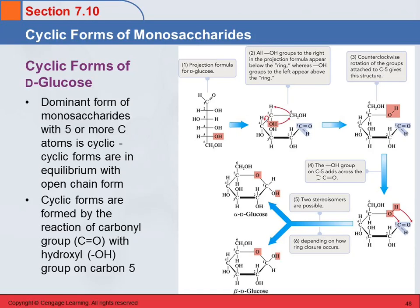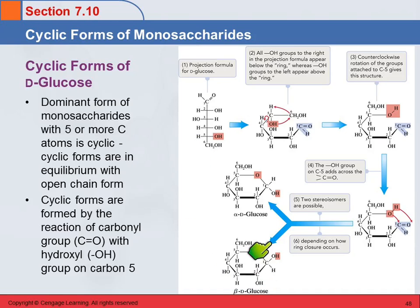It turns out that the dominant form of most monosaccharides is actually cyclic — they make a ring with themselves. Here's an illustration of how it does that. Carbon 1 is here, and down on carbon 5, this hydroxyl group is going to be involved in making the ring. What we're going to end up with is a heterocyclic six-membered ring, and this oxygen here is going to be involved in that.